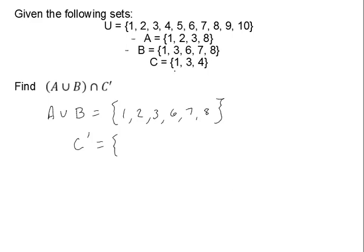Set C is {1, 3, 4}. So looking to our universe of 1 through 10, I'm not going to include 1 or 3 or 4. So the complement of C is now everything else, meaning 2 and 5 and 6, 7, 8, 9, and 10.